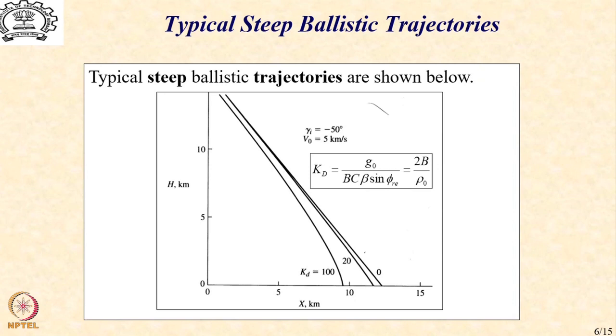In fact, for kd equal to 0 it is exactly a straight line and as we can see from the expression of kd which contains ballistic coefficient that would happen in the case of a large value of ballistic coefficient. And a large value of ballistic coefficient as we have seen earlier is directly possible with a small value of drag coefficient or a large weight.